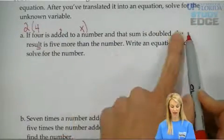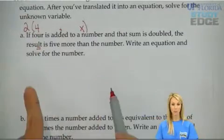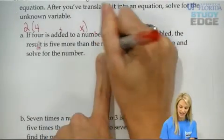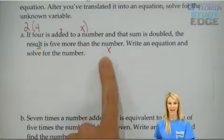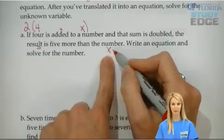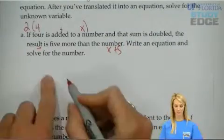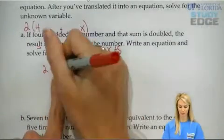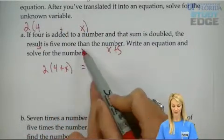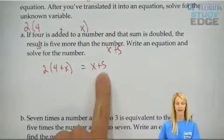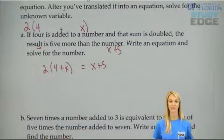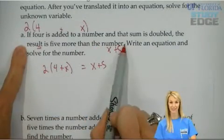This result that we just got, 2 times 4 plus x, is equal to five more than the number. So, what's the number? x. And it's equivalent to five more than x. Is five being added to x? Is five being subtracted from x? No. It's equal to five more than that number. We have that number, and we still have to add 5 to it. So that's what we get. We get 2. We are doubling the sum. We are doubling the sum of 4 plus x. The result, the result of this is what? It's five more than the number. Well, the number adding another 5. So, 2 times 4 plus x is equal to x plus 5. That's our equation. We took this really long sentence and made it into an equation.